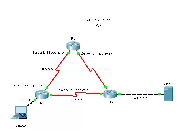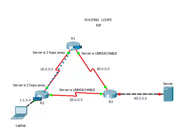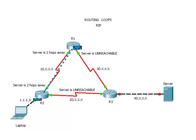Suppose the routing loop protection on the router was disabled and the interface leading to the server went down on Router 3. Router 2 would send the packet to Router 1 and Router 1 would send the packet back to Router 2. This is because Router 3 has advertised that it no longer has a path to the server, but Router 1 still believes that Router 2 has a path that's two hops away, and Router 2 still believes that Router 1 has a path to the server which is two hops away. The packet will continue to loop until its time to live runs out.